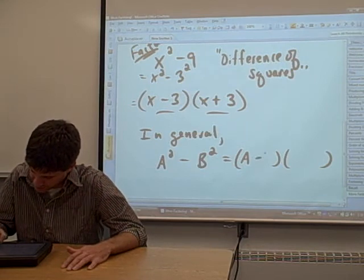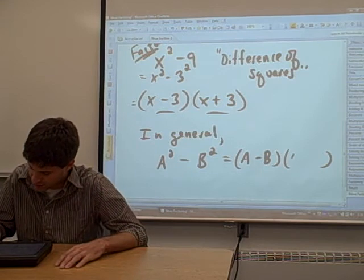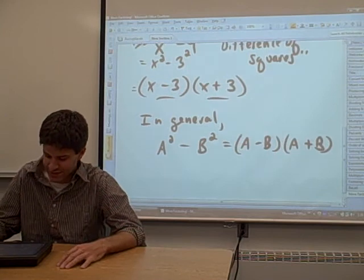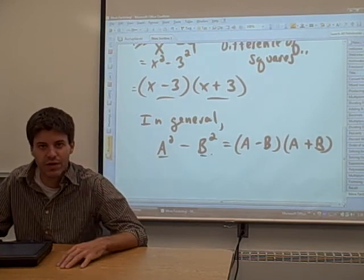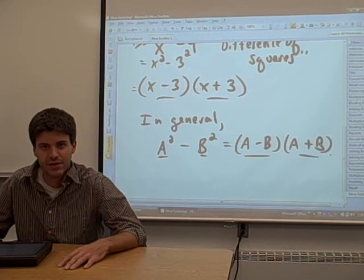I'm sorry. I'll do minus the second thing as a binomial times the quantity, the first thing plus the second thing, just like that. So anytime you have a situation where you have one term squared, another term squared, and you subtract it, you can always factor it like this.